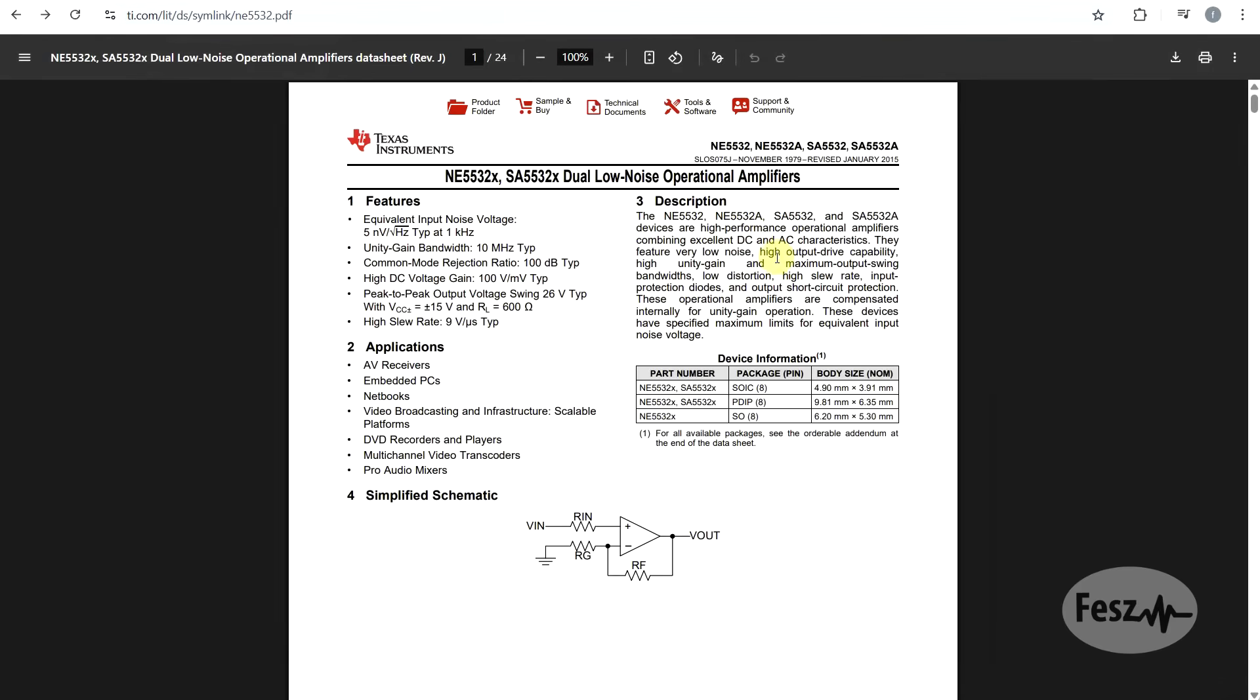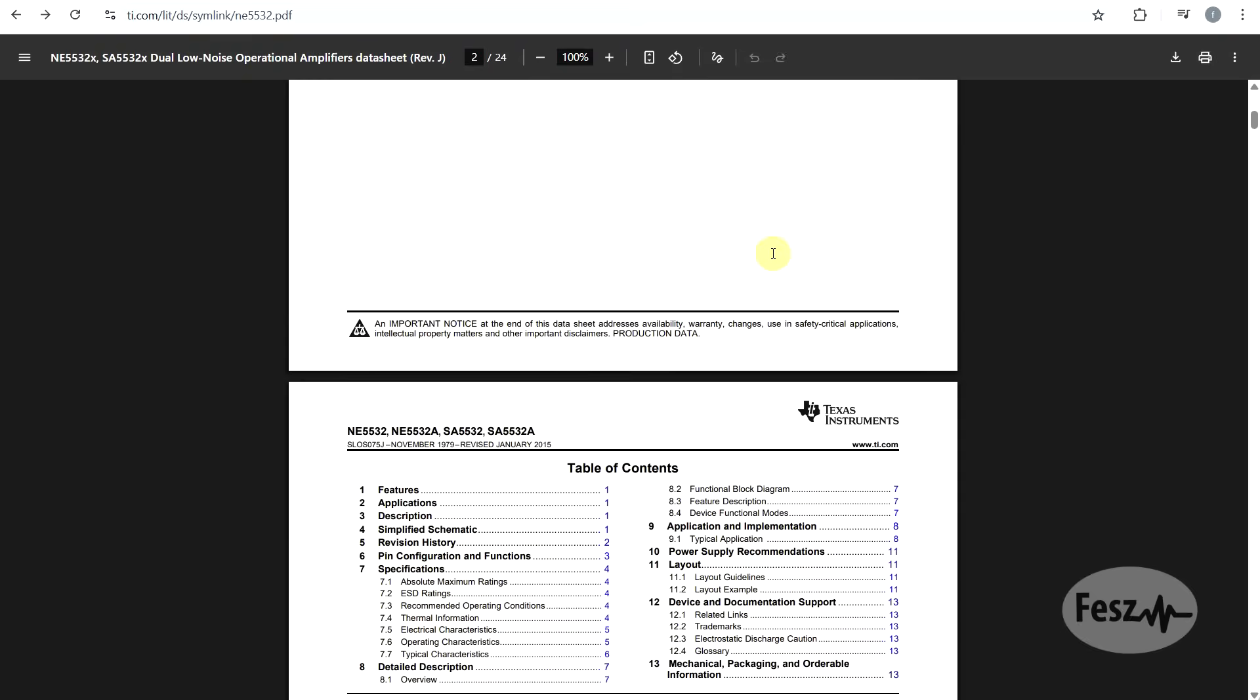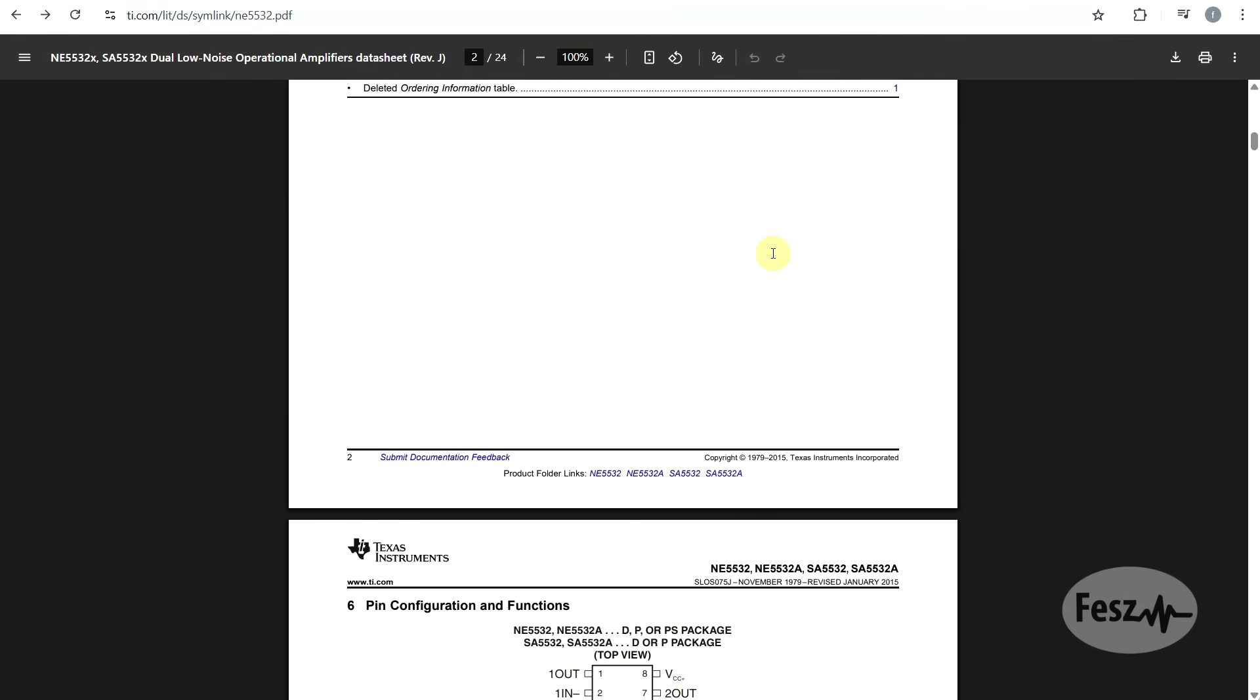To start things off, let's look at a couple parameters which do appear in almost every operational amplifier datasheet. So what I have here is the NE5532 low noise op-amp from Texas Instruments, it's quite a common component in the audio field.